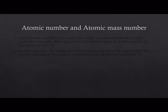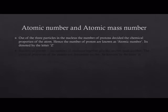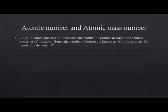Atomic number and atomic mass number. Out of the three particles in the nucleus, the number of protons decide the chemical properties of the atom. Hence the number of protons are known as atomic number, which is denoted by the letter Z. If you manage to change the proton numbers in the nucleus, you will change the atom itself.